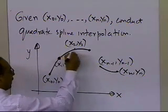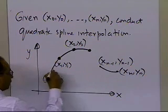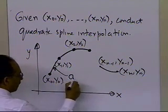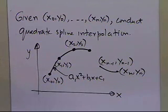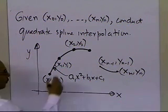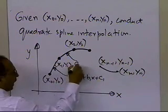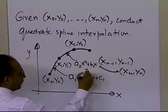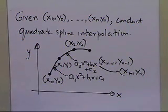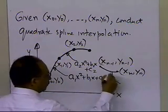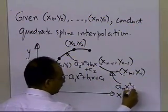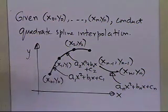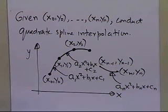So the first quadratic spline will be a1·x² + b1·x + c1, which is the quadratic polynomial going through the first two data points. Through the second interval we'll have a2·x² + b2·x + c2 going through the second and third data points, and so on. The last spline will be an·x² + bn·x + cn. Through every two consecutive data points, you have a quadratic polynomial.